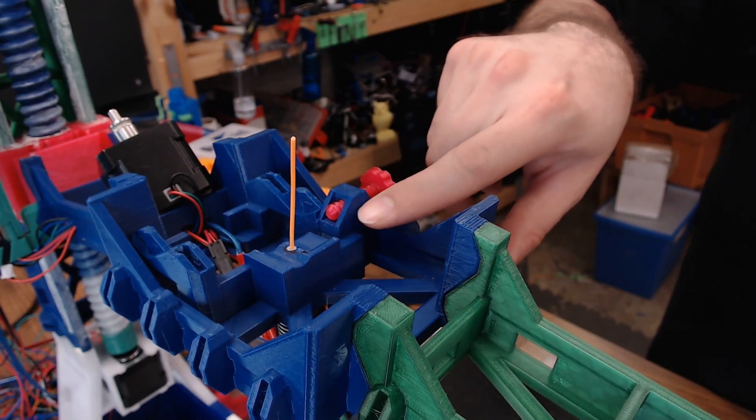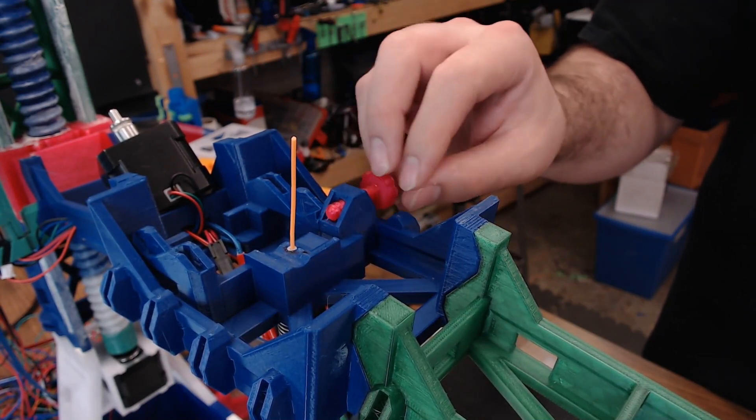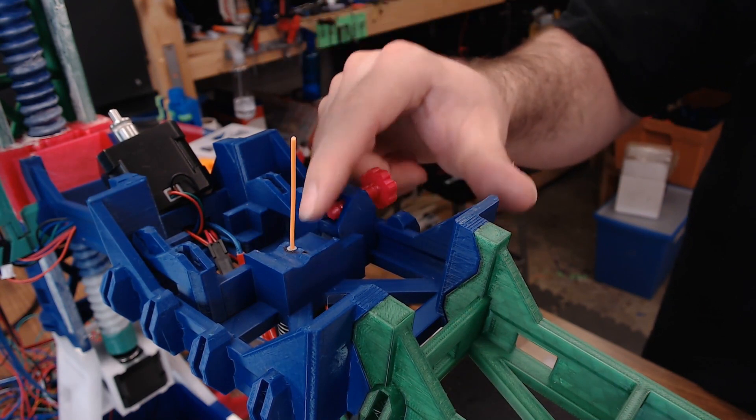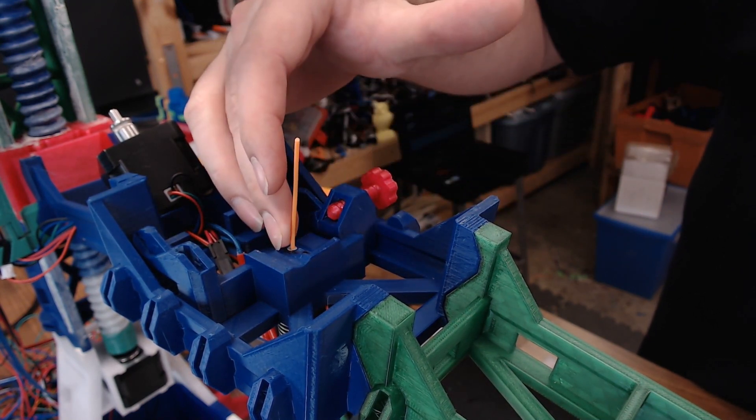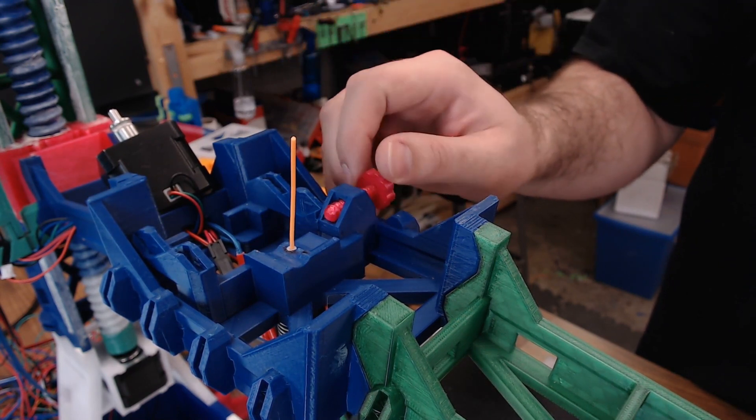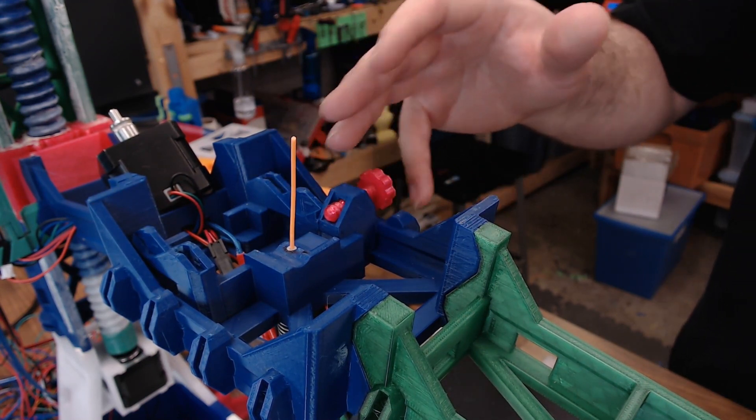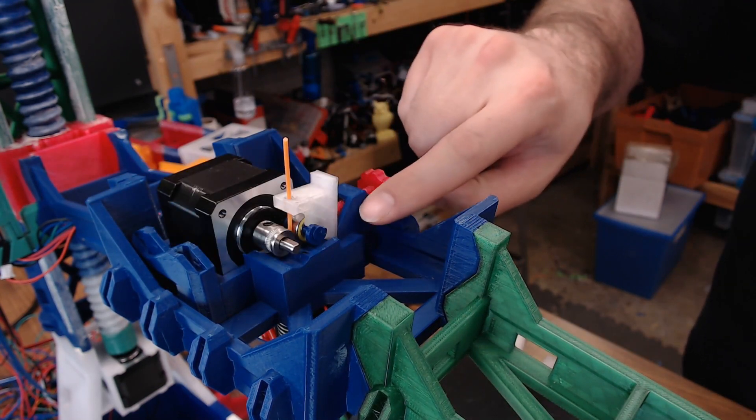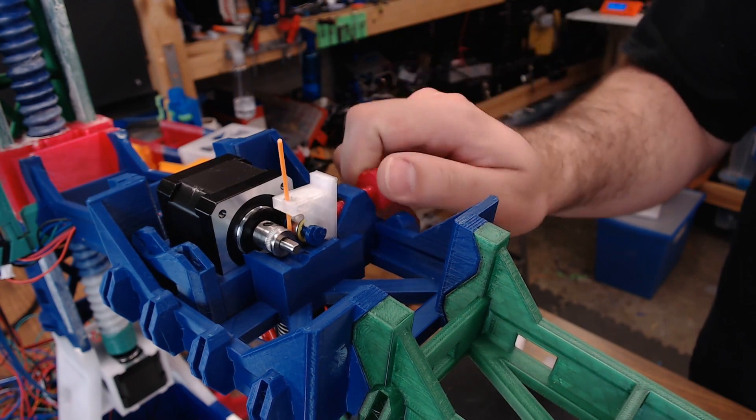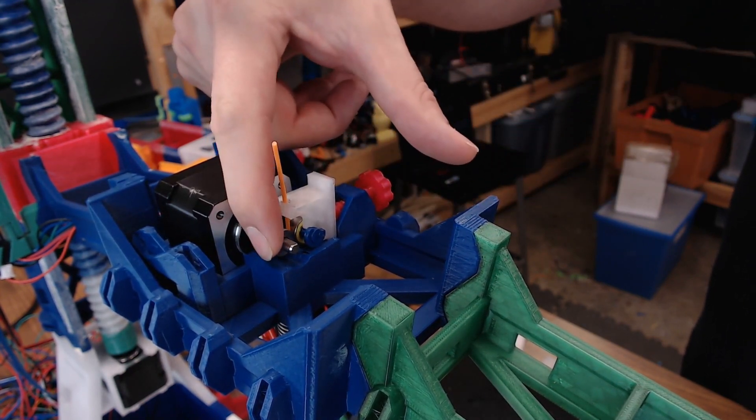I also beefed up this part right here. This is the part that holds the compression screw that allows you to put tension on your idler so it presses up against the filament. The original file, this portion was really thin and you could break it really easily with this screw. This one isn't going anywhere. I'll put it back together so I can kind of show you what it does. With this being quite a bit more substantial, you can really tighten that screw up and get a good grip against the idler and that extruder gear.